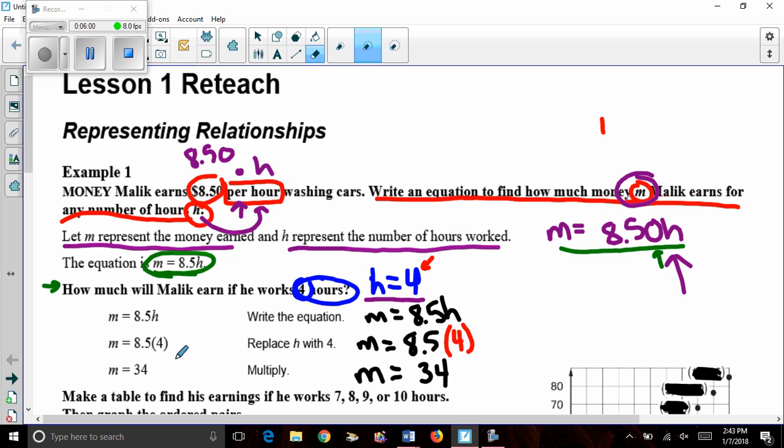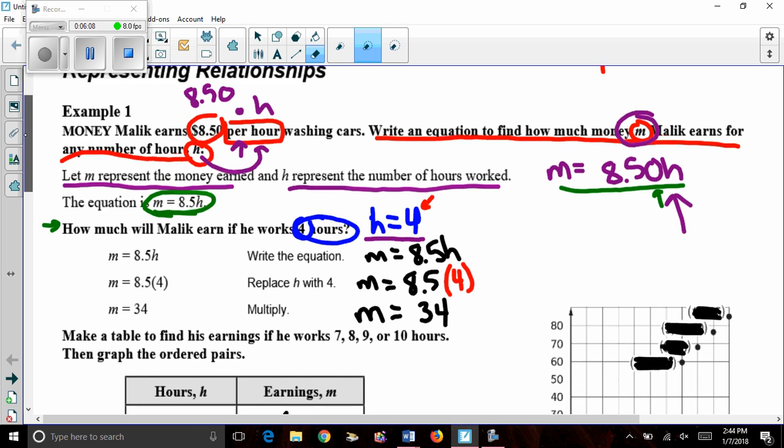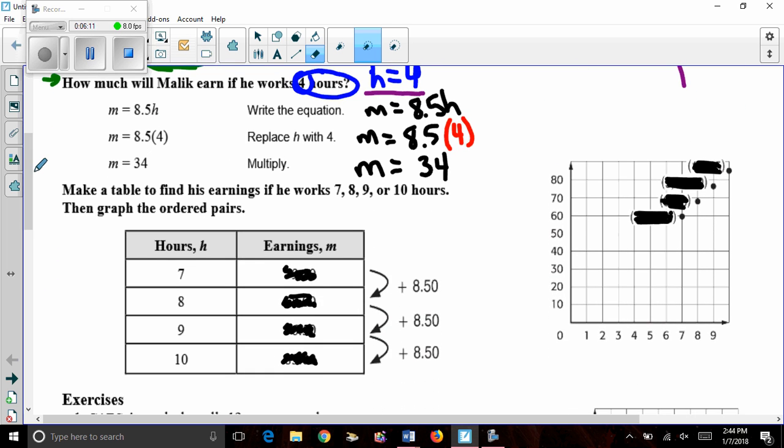Now, let's see other ways we could represent this relationship. Next, it says, make a table to find his earnings if he works 7, 8, 9, or 10 hours, and graph the ordered pairs. Well, let's see how they're doing that. And really, we're going to use the equation to find each of these numbers. What we have here is we fill in the 7, 8, 9, and 10 under our hours. So, in this case, h equals 7, and h equals 8. And I want to figure out, well, what does m equal when I do that?